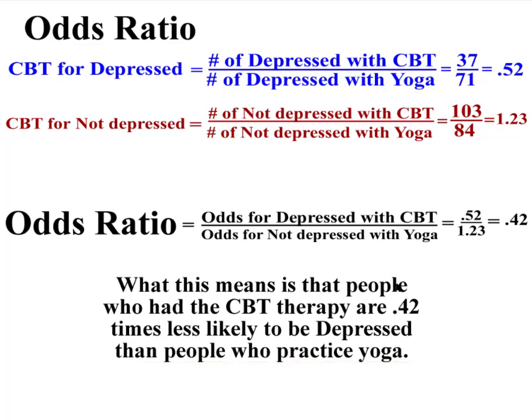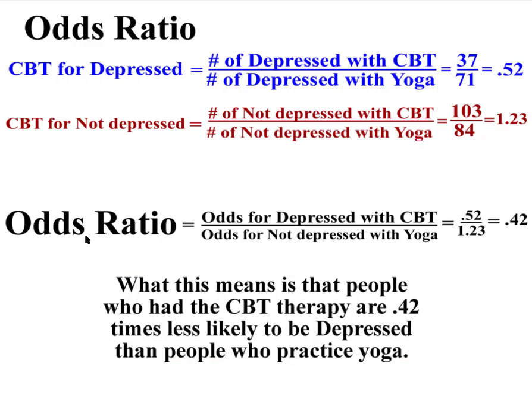I hope this helps. Odds ratios in chi-square are kind of rare, but some teachers will insist on them. MGZ out.